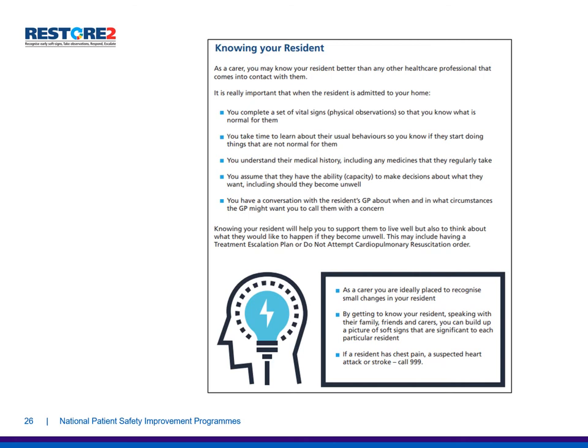You should understand their medical history, including any medications they regularly take. You should assume that they have the ability or capacity to make decisions about what they want, including when they become unwell, and if they don't have that capacity, that appropriate measures are taken. You should have a conversation with the resident's GP about when and in what circumstances the GP might want you to call with a concern. Knowing your resident will help you to support them to live well, but also to think about what they would like to happen if they become unwell, including having a treatment escalation plan or do not attempt cardiopulmonary resuscitation order.